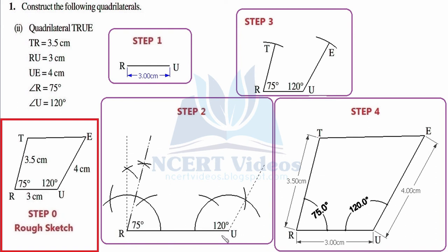In step number three, we get the actual measurements. RT = 3.5 centimeter, so we adjust the compasses to 3.5 centimeter, put the needle at R, and intersect the previously constructed dotted line, marking the point as vertex T. Then UE = 4 centimeter, so we readjust the compasses to 4 centimeter, put the needle at U, and intersect the previously constructed ray, marking that point as vertex E. Pause and try it yourself.